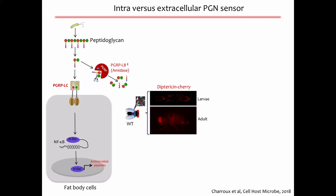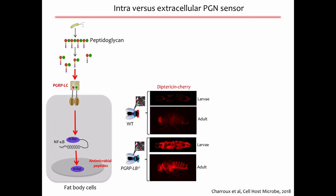The IMD/NF-κB pathway is under very strong negative regulation. One regulator is PGRP-LB, another member of the PGRP family that acts not as a receptor but as an enzyme that cleaves peptidoglycan, thereby reducing the intensity of NF-κB pathway activation. In a PGRP-LB loss-of-function mutant, you see more peptidoglycan, stronger NF-κB activation, and more antimicrobial peptide production — a much stronger immune response compared to wild type.